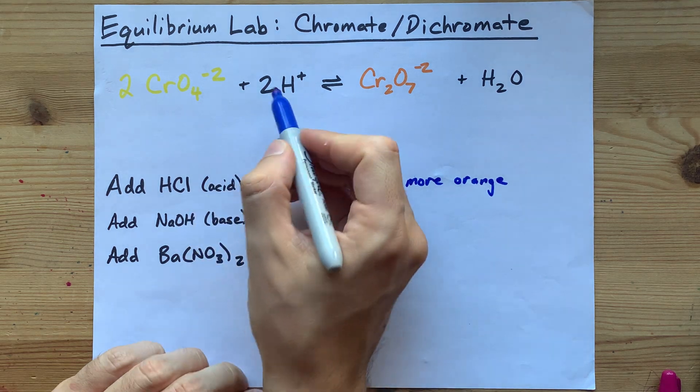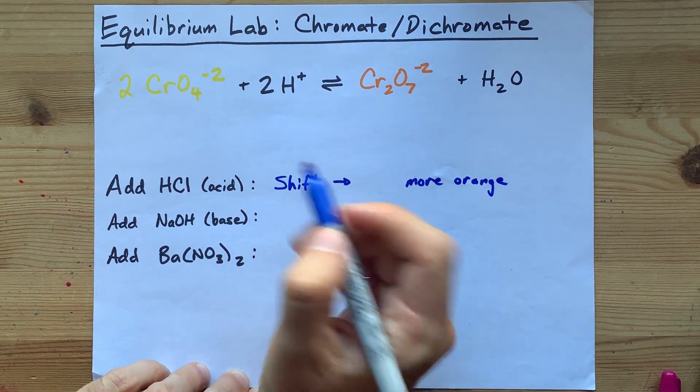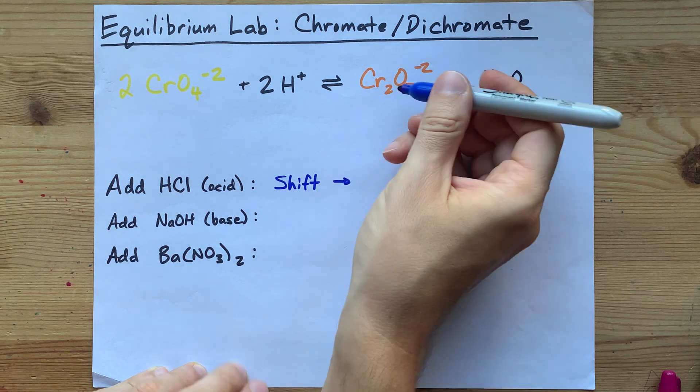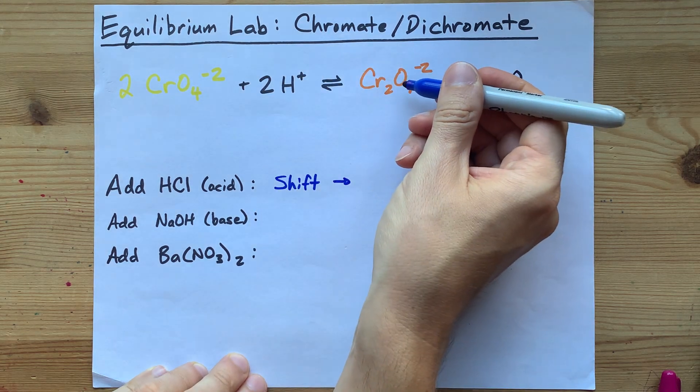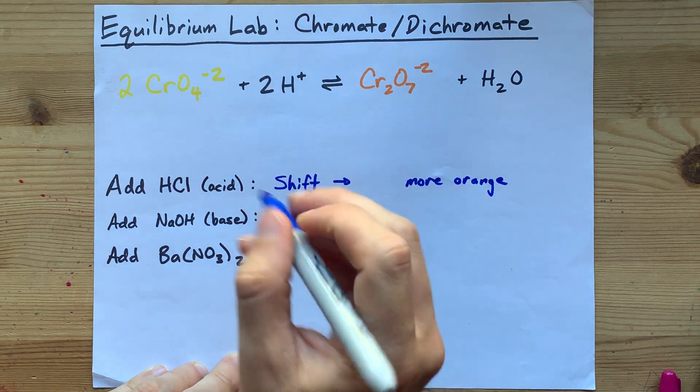How are you going to replace the H pluses that just got used up when you added the base? Well, you can replace them by pushing this reaction a little bit to the left.